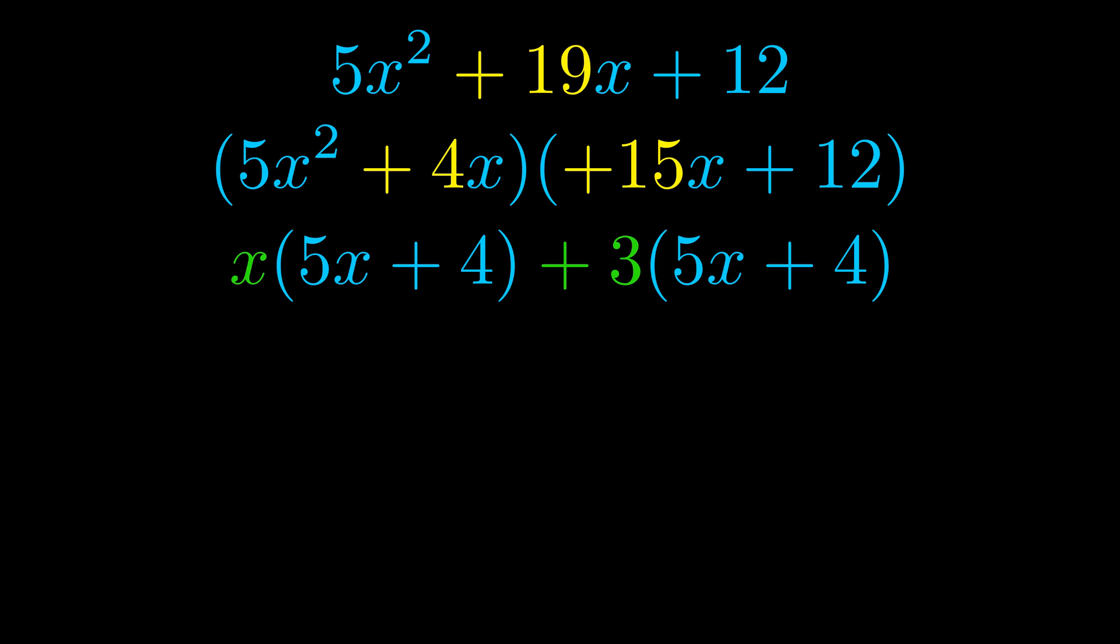Notice also how what remains inside of the parentheses is the same in both cases. The blue values are the same. Those blue values will become one of our factors and we will combine the two green values, the GCFs that we pulled out, to get the other one. And that is our fully factored equation.